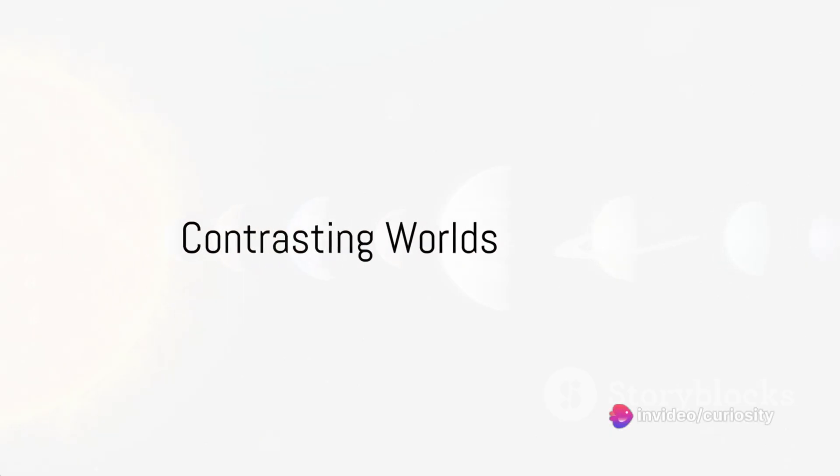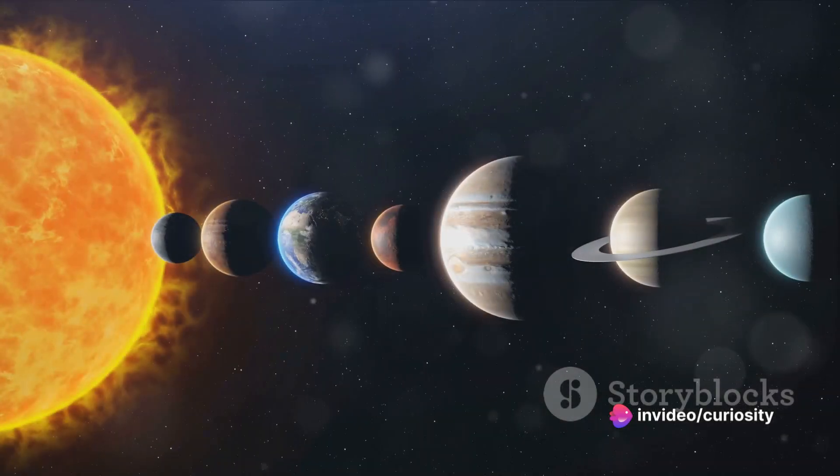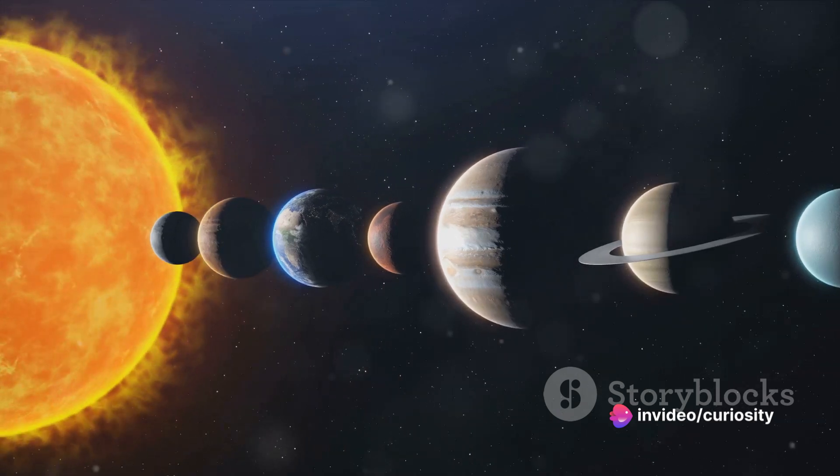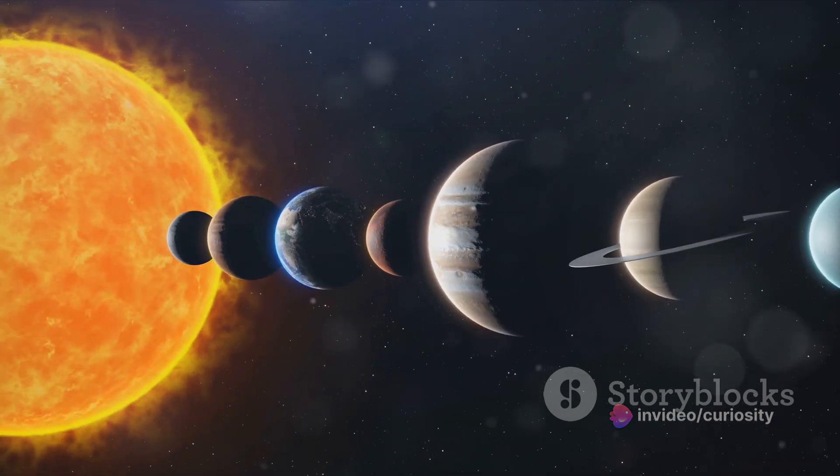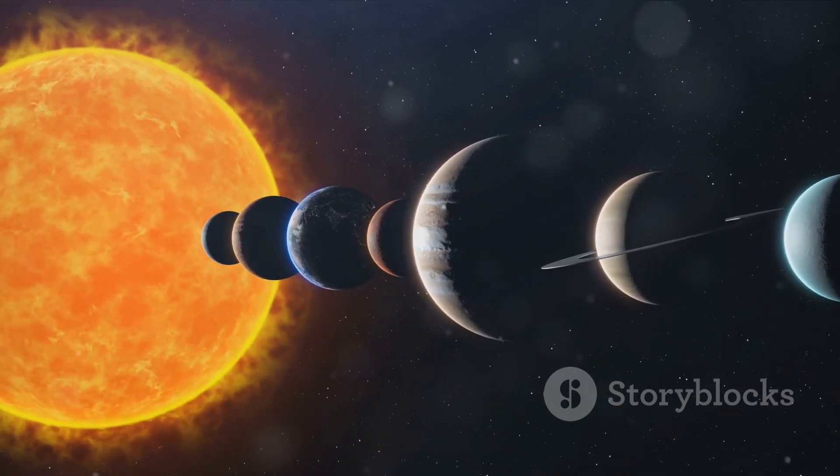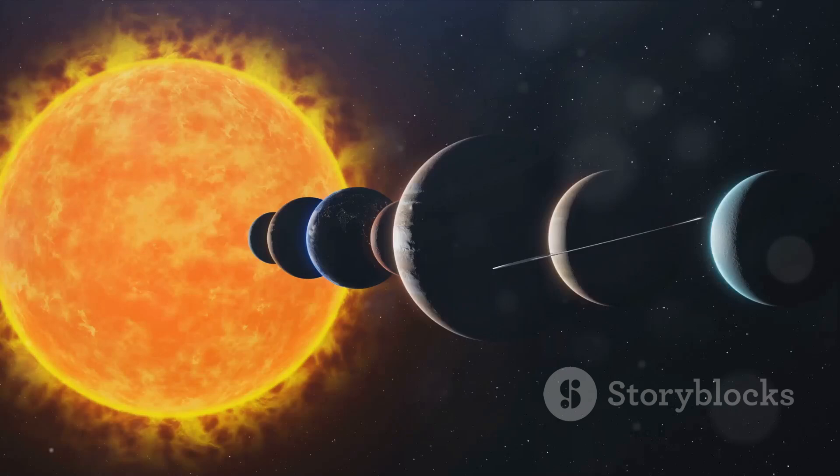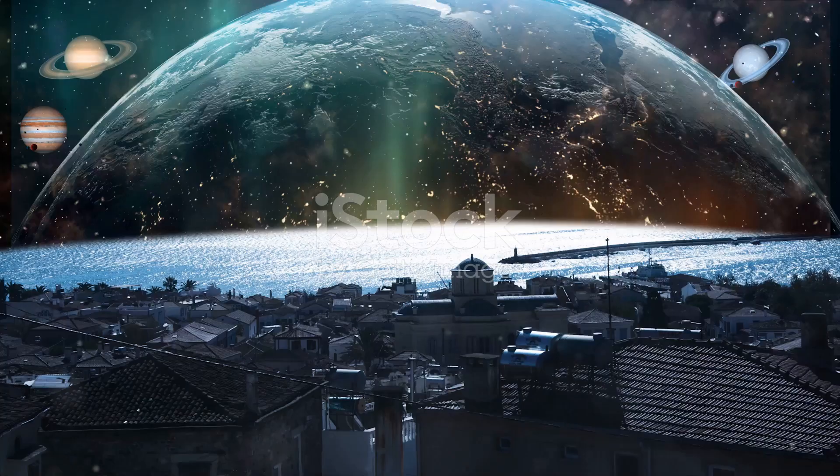In the cosmic dance of our solar system, two planets, Earth and Mercury, twirl in their distinct orbits. On the surface, these celestial neighbors appear vastly different, yet delve a little deeper and you'll find a few surprising commonalities.